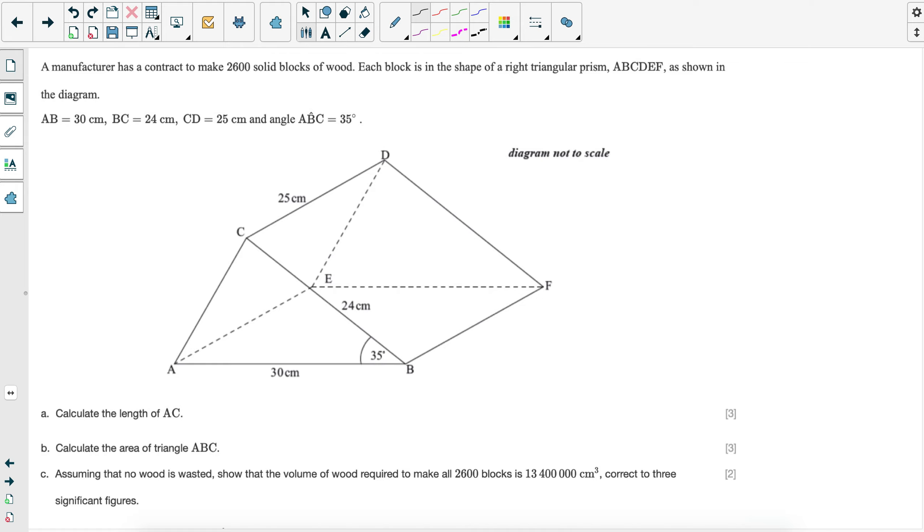You'll just have to make use of different formulas from your data booklet. So you have a manufacturer has a contract to make 2,600 solid blocks of wood. Each one has to be in the shape of a triangular prism. Make sure that all the lengths are mentioned in the diagram, so do match them up.